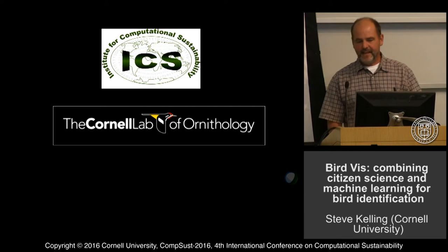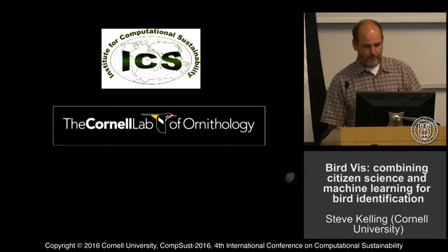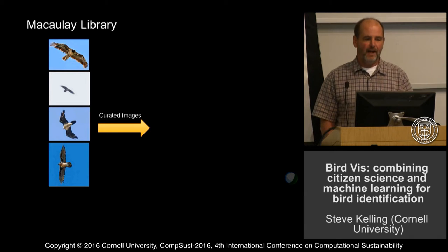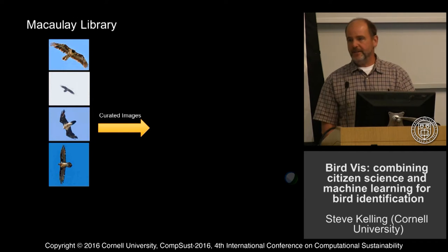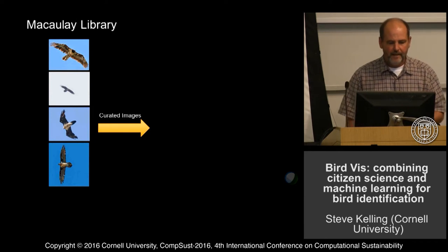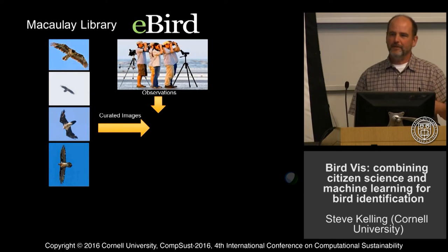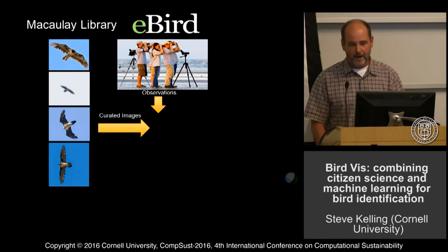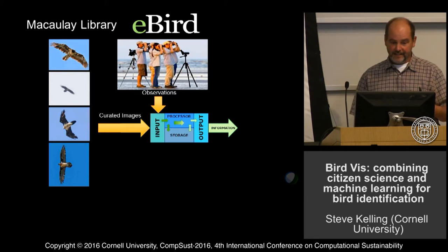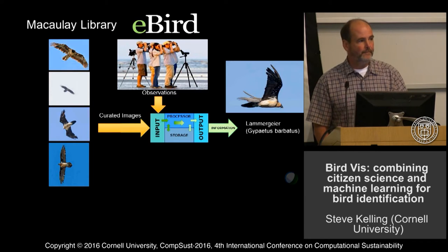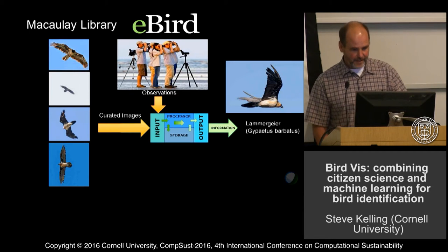What I want to talk about today is how the Institute of Computational Sustainability has really informed how we do some of our work at the lab of ornithology. At the lab we have the Macaulay Library — a hundred-year-old natural history library that collects images, sounds, video, and rich media on the natural world, and they curate a system of images of birds. We also have this project called eBird, which engages bird watchers to submit their observations. These are the two pieces of data that we fit into a model, and that model allows us to take an image of a bird and give it a name as accurately as possible.